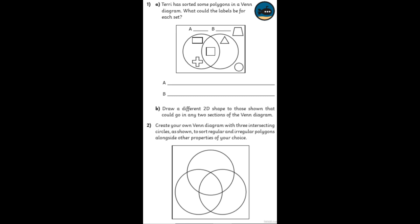And then, finally, for chilli 3, moving it up a notch with the Venn diagram. Can you create your own Venn diagram with 3 intersecting circles to sort regular and irregular polygons alongside other properties of your choice? So, you might want to think about symmetry, quadrilaterals, something to do with the angles as a criteria. That's entirely up to you. But can you make it work? And extra challenge, is there a shape that would fit into every section of the diagram you create? Or is it the case that actually certain sections will not have any shapes in because it's simply impossible to do? You let me know.